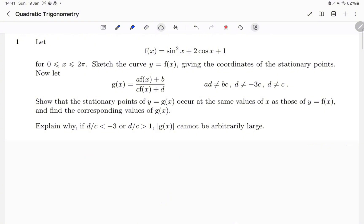Show that the stationary points of y equal g of x occur at the same points of x as those of y equals f of x, and find the corresponding values of g of x. Explain why, if d over c is less than negative 3, or d over c is greater than 1, then the modulus of g of x cannot be arbitrarily large.